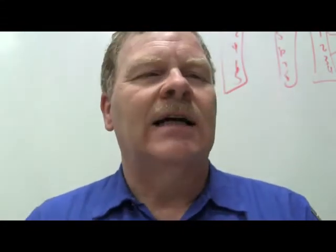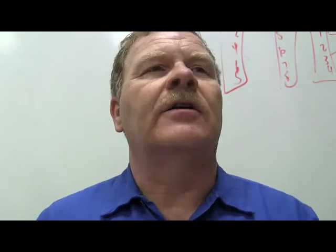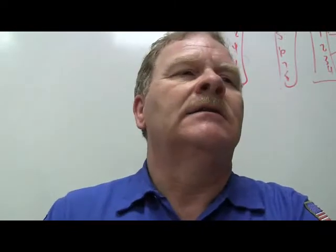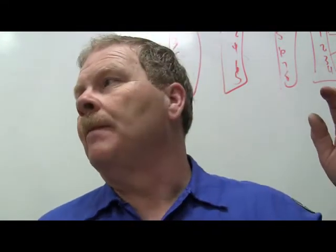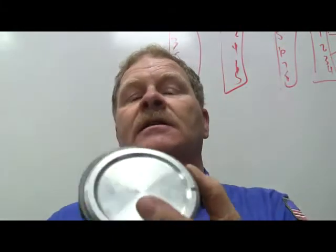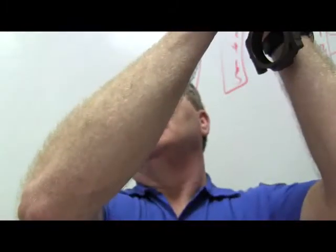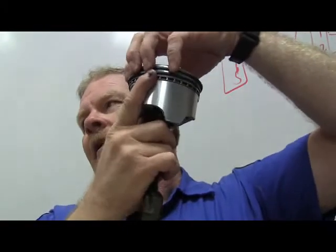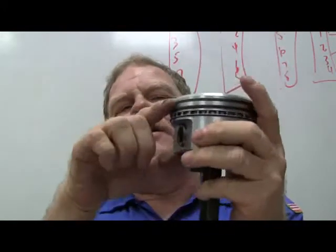What's ring side gap? Piston ring end gap is measured with a feeler gauge with the ring in the cylinder. Grab me a piston with some rings on it out of that box over there. The side gap is you're going to put your feeler gauge between the ring and the land on the piston. That's how much can the ring go up and down in that land.